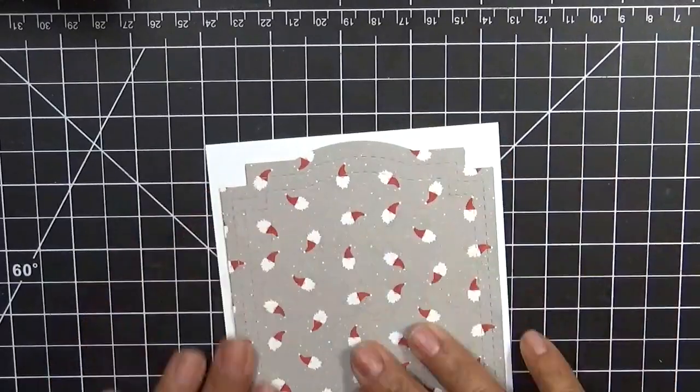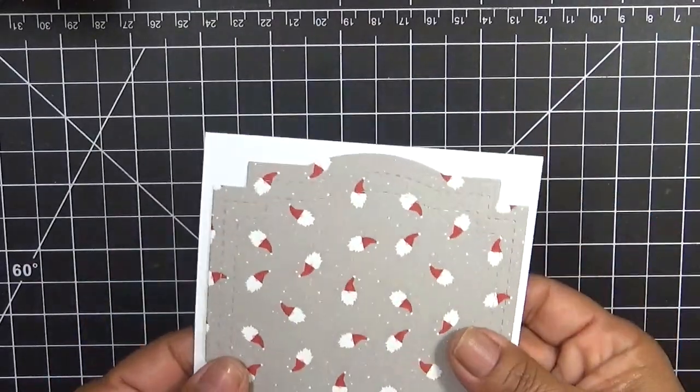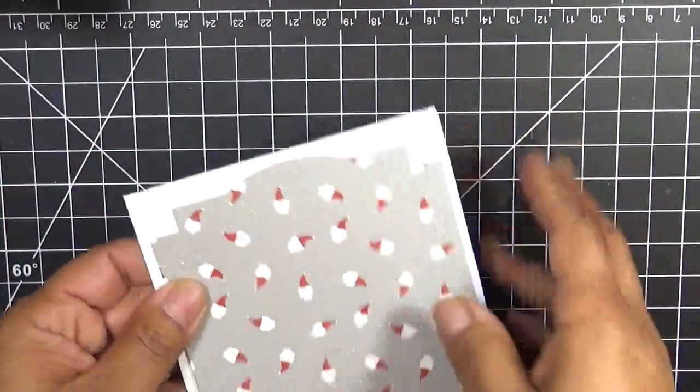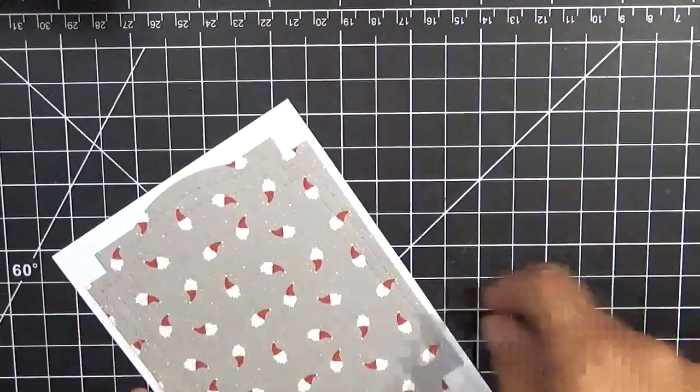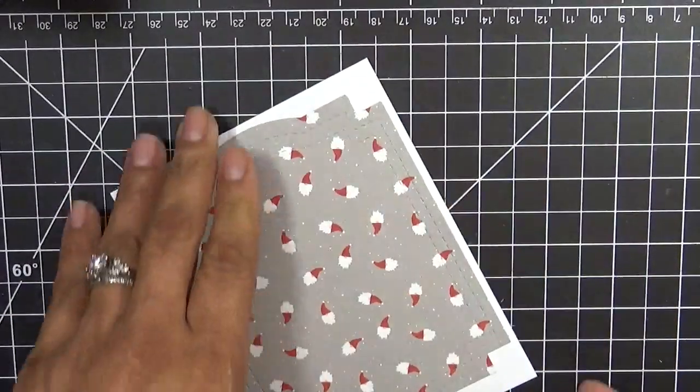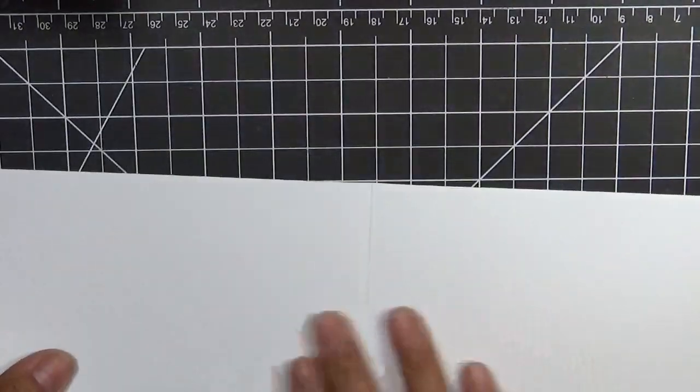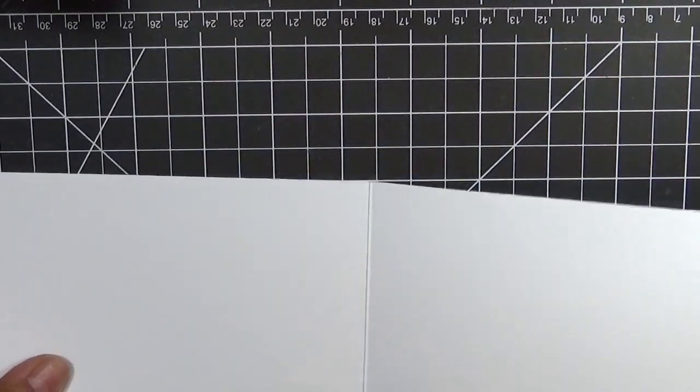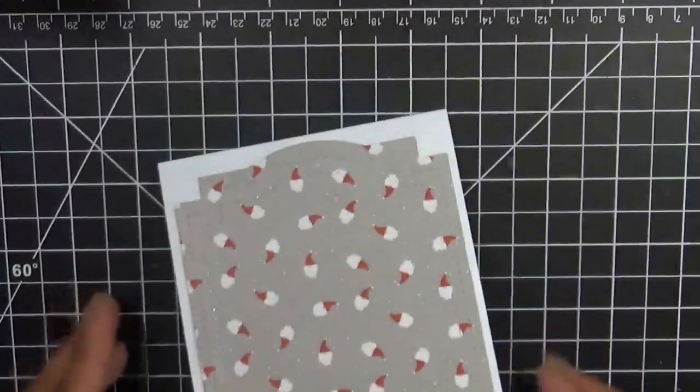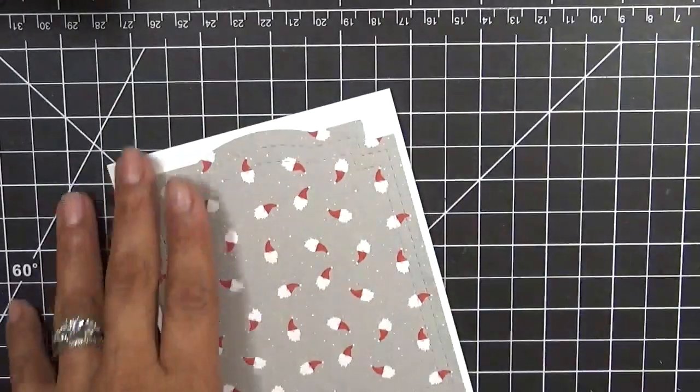This is paper from Paper Tray, the card stock, the white card stock is from Paper Tray Inc. And this is a standard A2 size card, which is four and a quarter by five and a half. But if you open it, it's eleven by four and a quarter and you just score it at five and a half and that's what makes your standard size card.